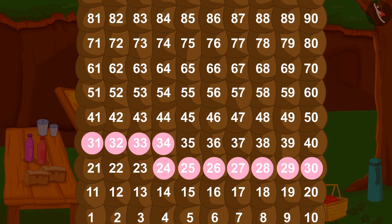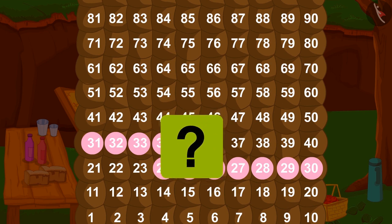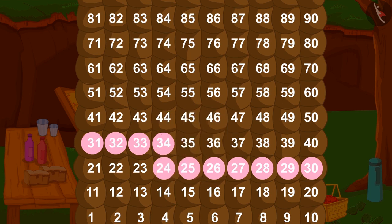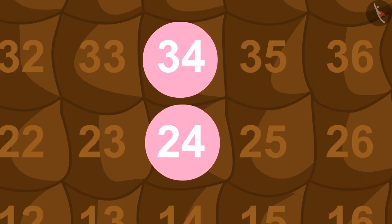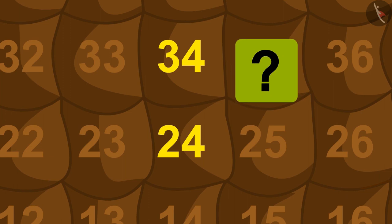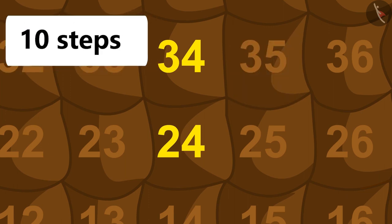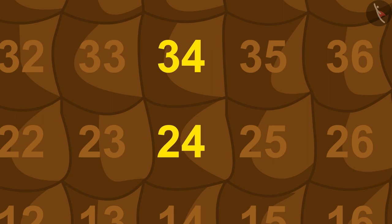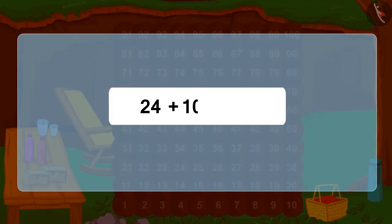Yes, in this way we can jump up and move from 24 to 34. How many steps is the jump from 24 to 34 equal to? Yes, this is equal to 10 steps. We can also write this as 24 plus 10 equals 34.